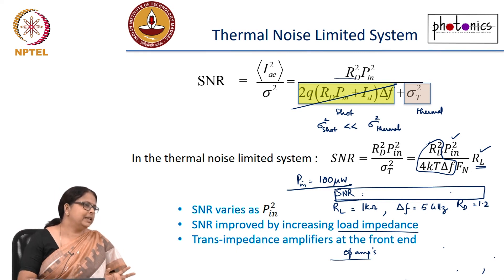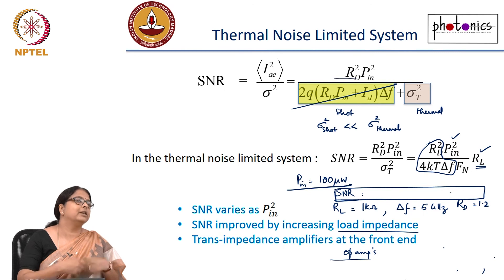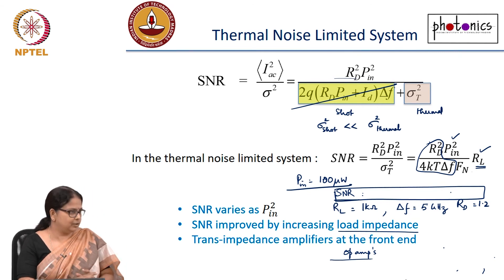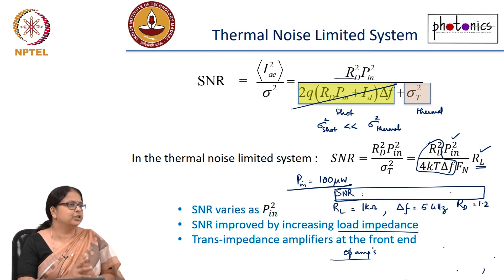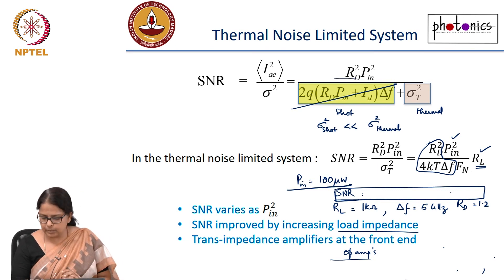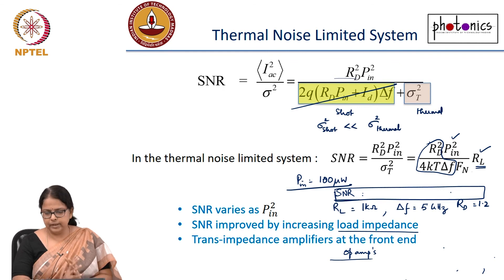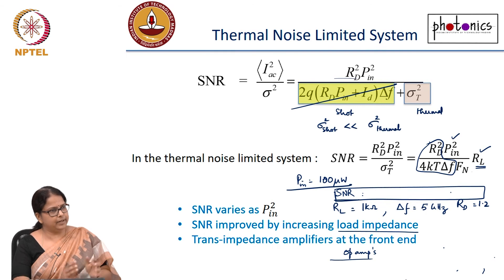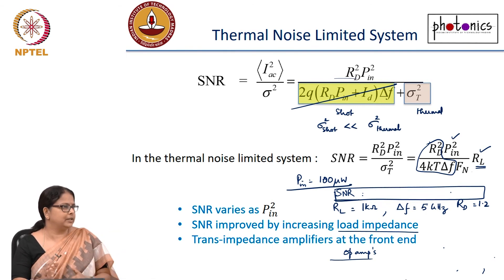As a homework problem, calculate the SNR for a system with P_in of 100 microwatts, R_L of 1 kilohm, bandwidth of 5 GHz, and R_d of 1.2 A/W operating in the thermal noise dominated regime. To summarize today's session: we quantified noise, defined SNR, and characterized shot noise limited and thermal noise limited operating regimes.